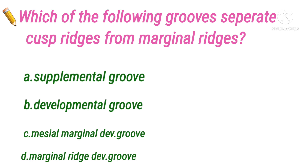The last question: which of the following grooves separate cusp ridges from marginal ridges? Option A supplemental grooves, B developmental grooves, C mesial marginal developmental grooves, D marginal ridge developmental groove. The answer is option B, developmental grooves.